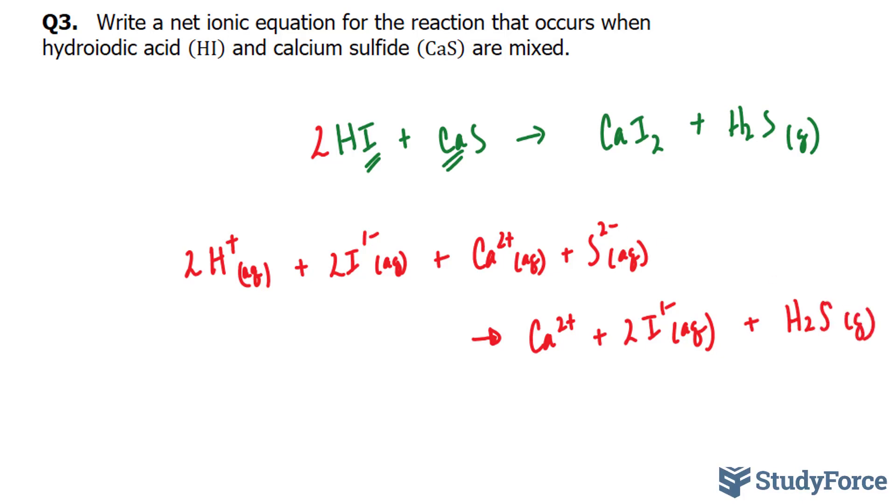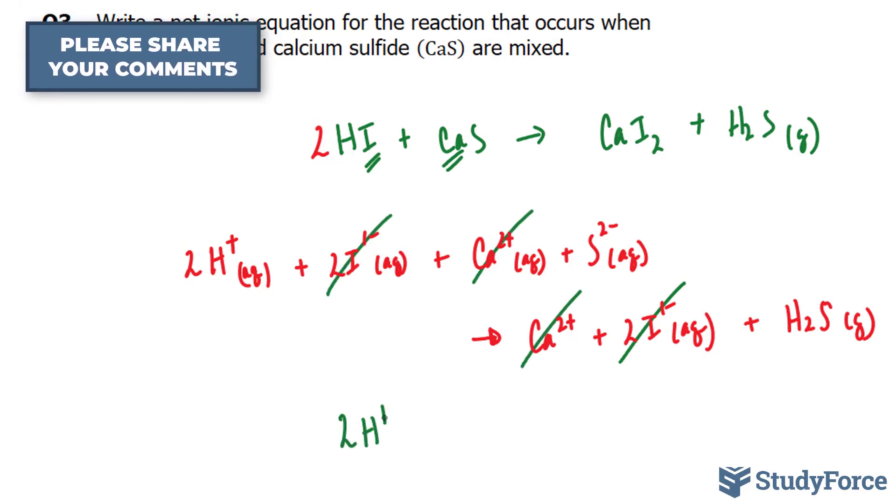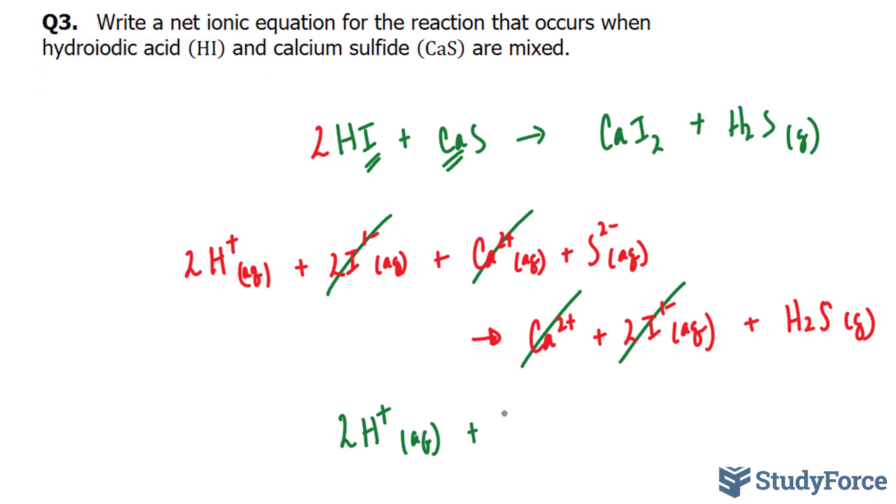Canceling out the spectator ions, this goes away, so does this, the calciums go away, leaving us with 2H+ plus S2-. And this forms H2S aqueous.